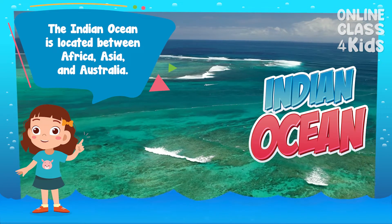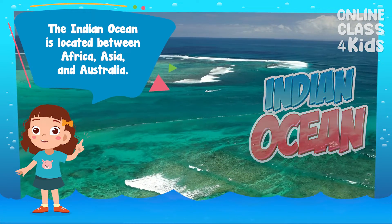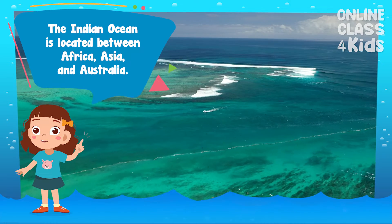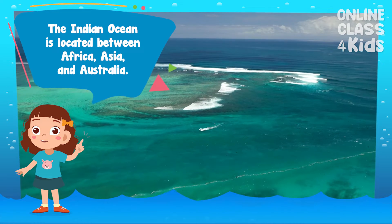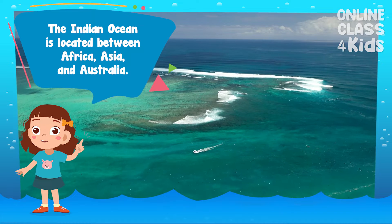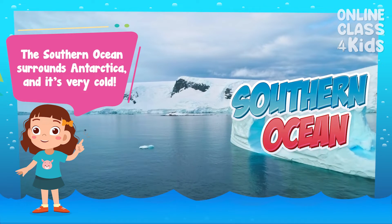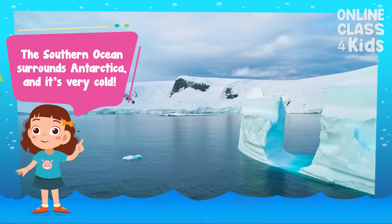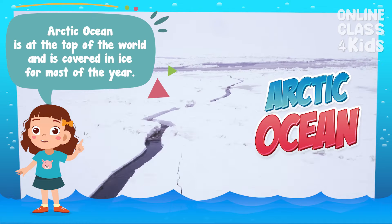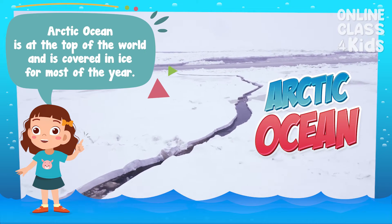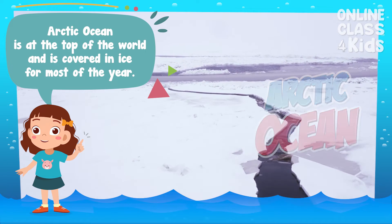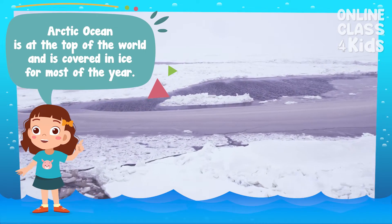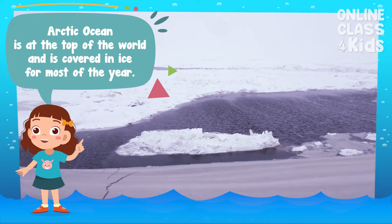And here's the Indian Ocean, which is located between Africa, Asia, and Australia. The Southern Ocean surrounds Antarctica and it's very cold. Finally, the Arctic Ocean is at the top of the world and is covered in ice for most of the year.